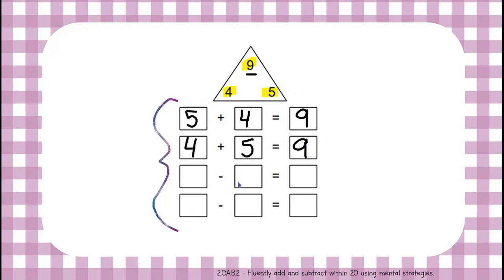Now let's do the subtraction. Remember, we need the larger number to take away from. We'll subtract from nine: nine minus five equals four, and nine minus four equals five. Now our fact family is complete.